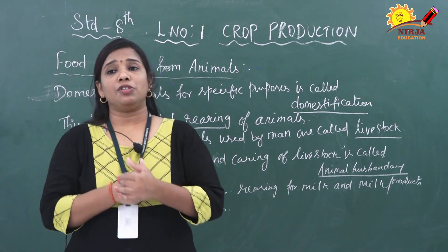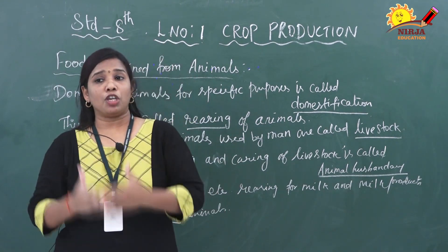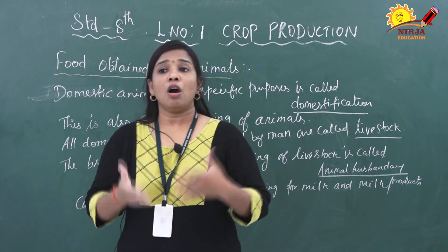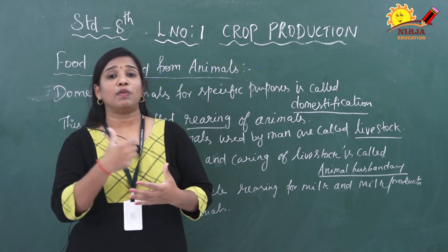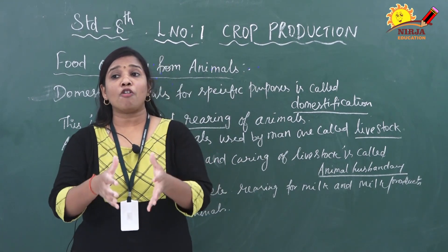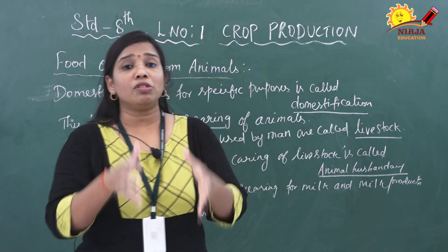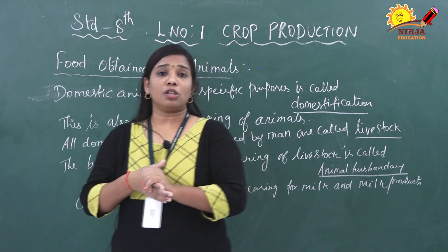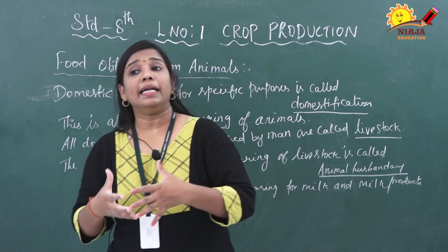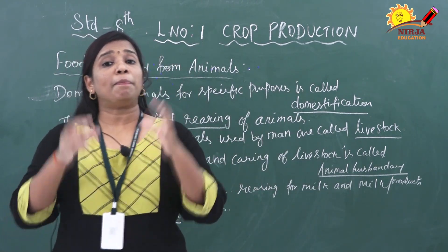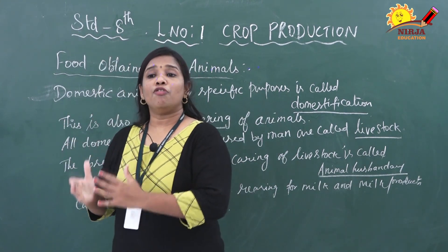Next one is fishiculture. What is meant by fishiculture? It means seafood such as fish, prawn, and oysters are also consumed because they contain rich amounts of minerals as well as protein. The rearing and breeding of fish on a large scale is called fishiculture, also called fish farming.